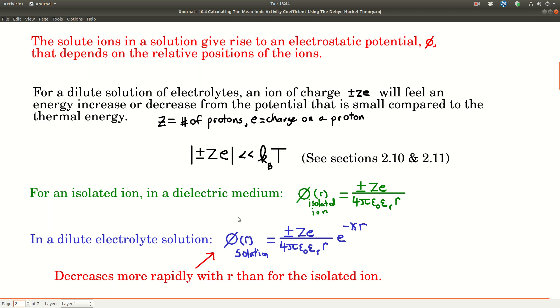It can be shown from electrostatics that for an isolated ion in a dielectric medium, just an ion in some uniform dielectric medium, the electrostatic potential as a function of r is equal to ±Ze over 4π epsilon naught epsilon r times r. Ze is the charge, 4π, epsilon naught is the permittivity of free space, epsilon r is the dielectric constant for that medium, and r is the distance from the center of the charge. In this model, we treat the ions as a point charge with zero volume.